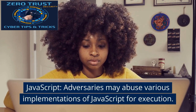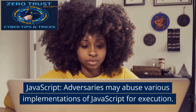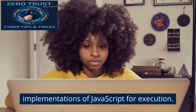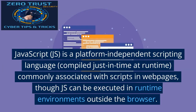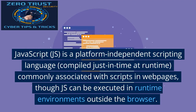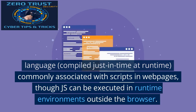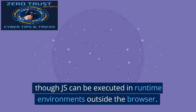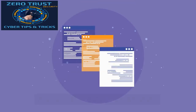JavaScript. Adversaries may abuse various implementations of JavaScript for execution. JavaScript (JS) is a platform-independent scripting language compiled just-in-time at runtime. Commonly associated with scripts in webpages, JS can also be executed in runtime environments outside the browser.